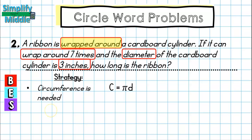My circumference formula is C equals pi times diameter. Next in the problem it told me it was wrapped around seven times, so this information doesn't help me till the end, but I do need to write down that I will be multiplying by seven at the end, because if I have wrapped around something seven times, then I am going to be multiplying. Finally, it tells me the diameter is three inches, so I can just go ahead and fill in d equals three.